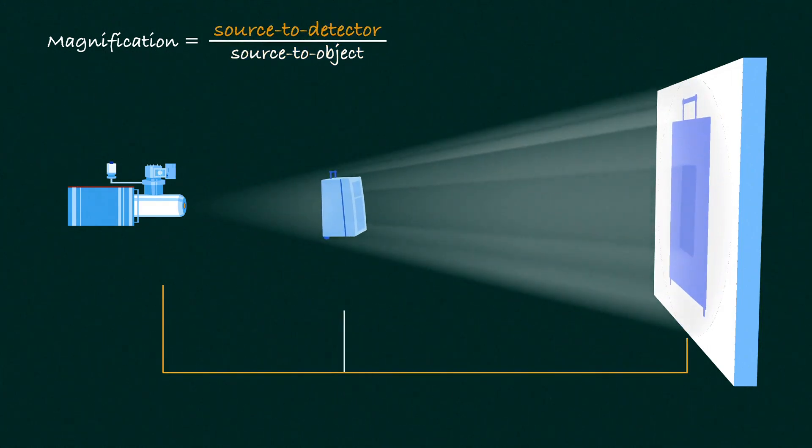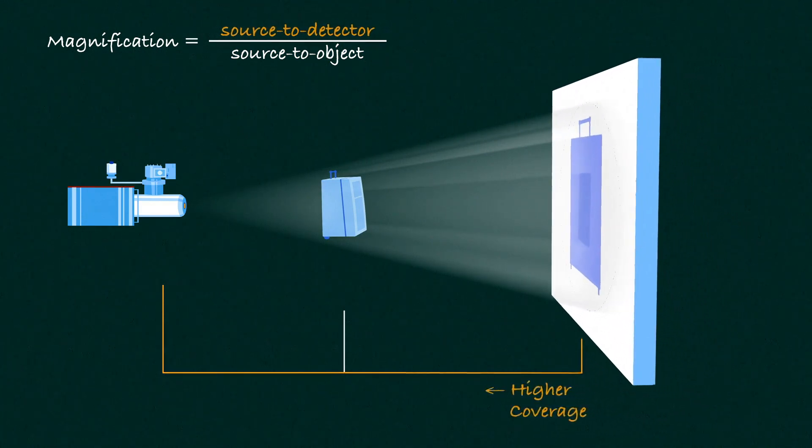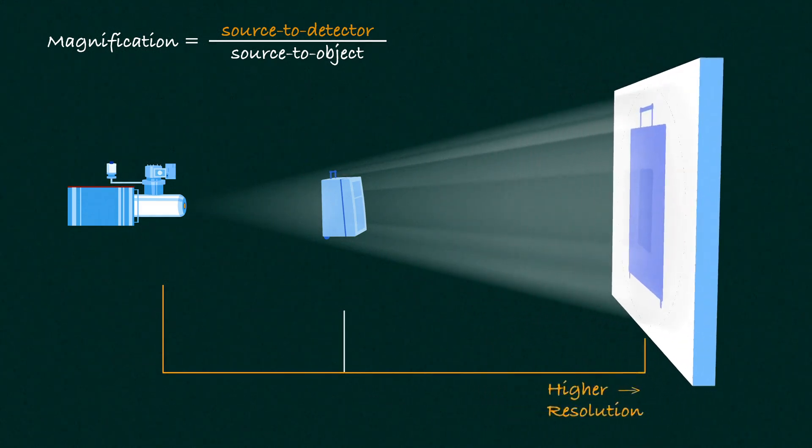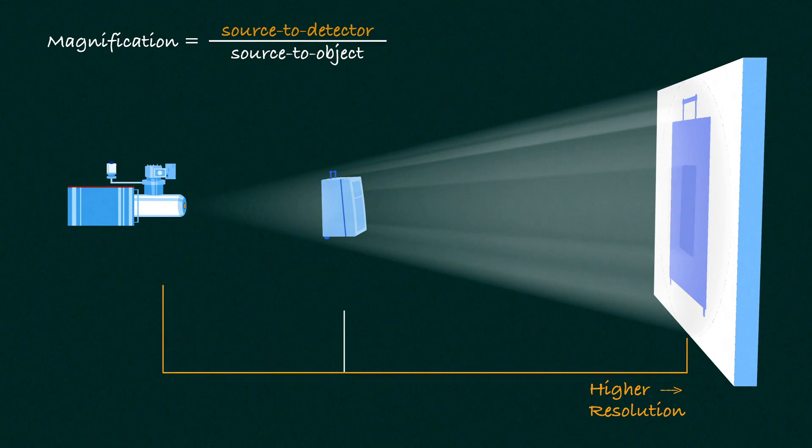The source-to-detector distance also plays a pivotal role in balancing magnification and coverage. Moving the detector closer to the object results in higher coverage, while moving the detector further away yields higher resolution.